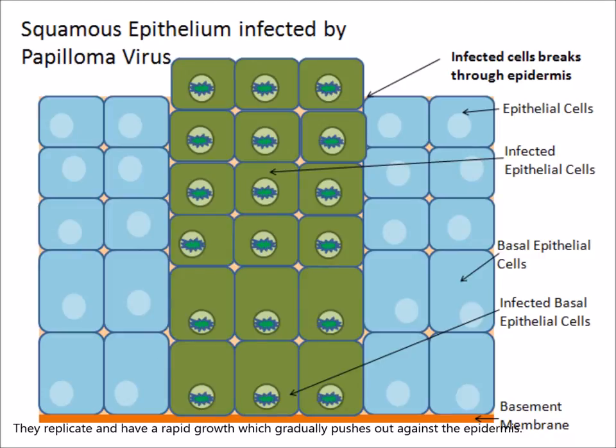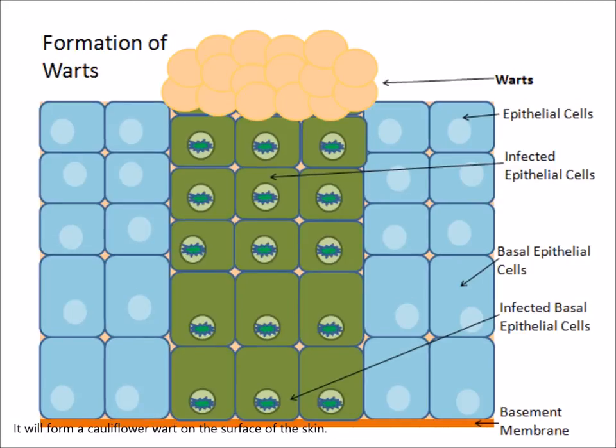The virus replicates and undergoes rapid growth, which gradually pushes out against the epidermis. After time, it will form a cauliflower wart on the surface of the skin.